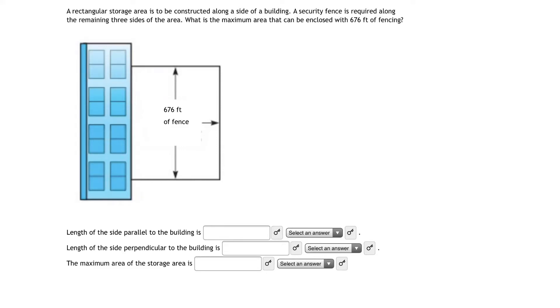A rectangular storage area is to be constructed along a side of a building. A security fence is required along the remaining three sides of the area. What is the maximum area that can be enclosed with 676 feet of fencing?